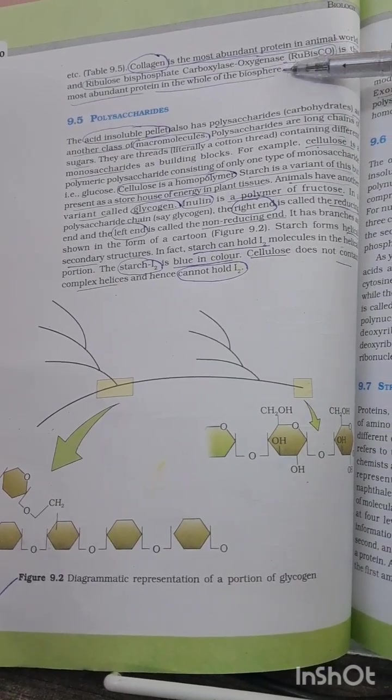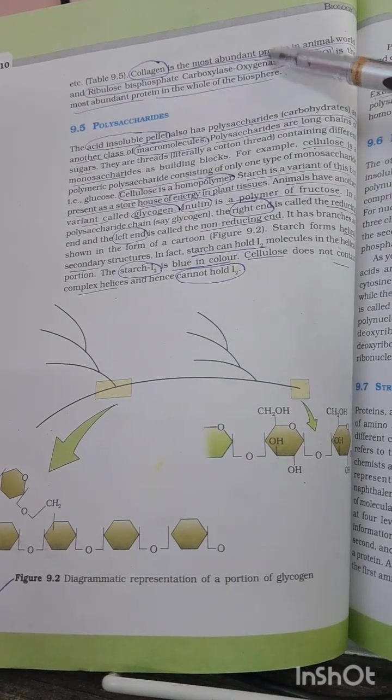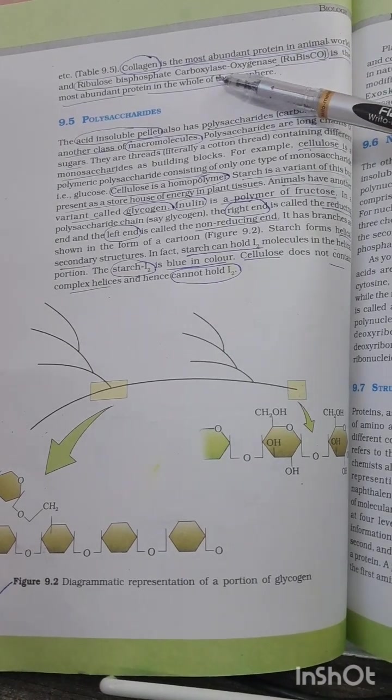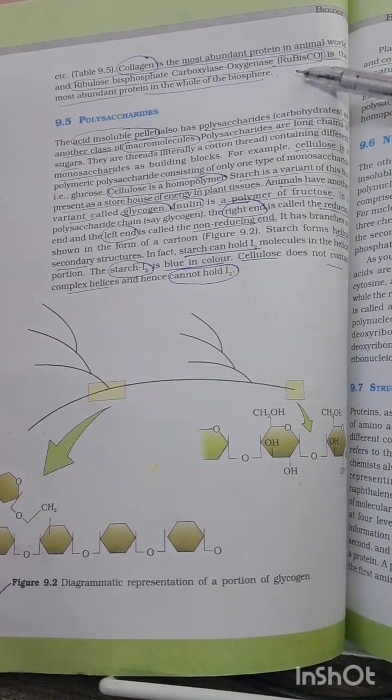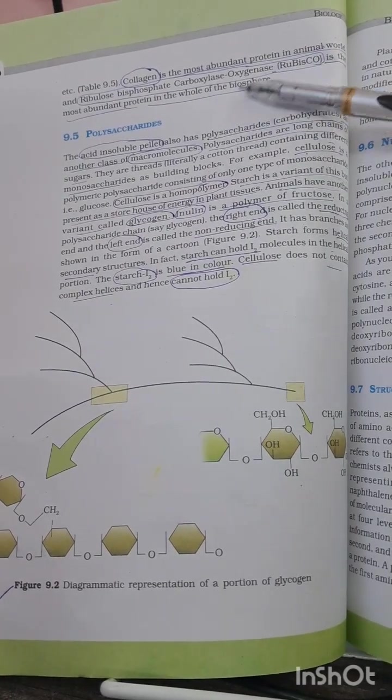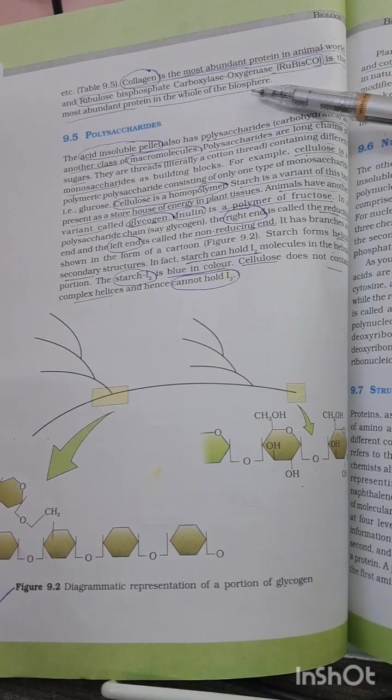Now coming to the most important question mentioned in this first paragraph: collagen is the most abundant protein in the animal world specifically. And ribulose bisphosphate carboxylase oxygenase, that is RuBisCo enzyme, is the most abundant protein in the whole biosphere. You have to distinguish these two and answer as the question asks.